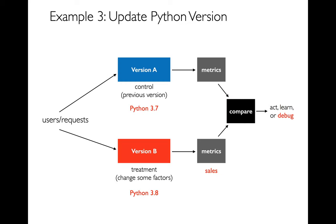Another use case: say you want to upgrade from Python 3.7 to Python 3.8. Ideally that should have no difference on anything, but there might be bugs in your code that only surface when you switch. What people often do is run both at the same time — some code on 3.7, some on 3.8 — and compare. Maybe switching to 3.8 breaks things for all Internet Explorer users. If you do these comparisons, you can catch that and decide you don't want to make that upgrade yet.